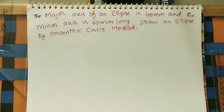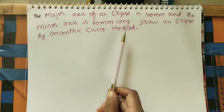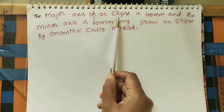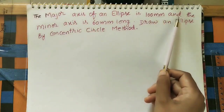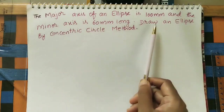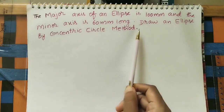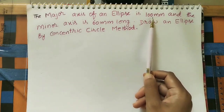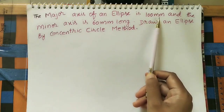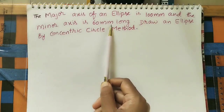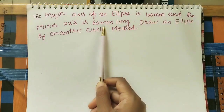Hello friends, today we will discuss how to draw an ellipse using the concentric circle method. The given data: the major axis of the ellipse is 100 mm and the minor axis is 60 mm long. Major axis length is 100 mm (10 cm) and minor axis length is 60 mm (6 cm).